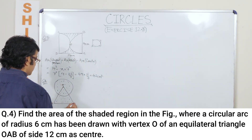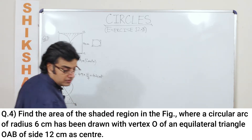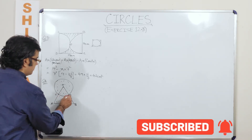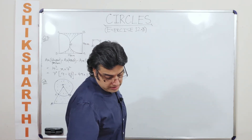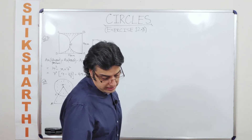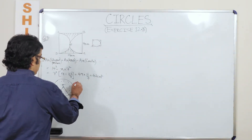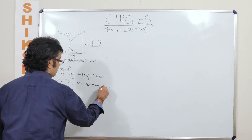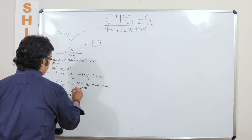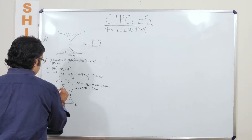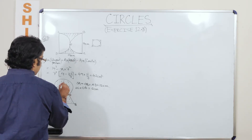This is O, this is A, this is B. The additional piece of information given is: OA is equal to OB is equal to AB is equal to 12 centimetres, and OD is equal to OC which is equal to 6 centimetres. We know that this angle is 60 degrees and the remaining angle is 300 degrees.